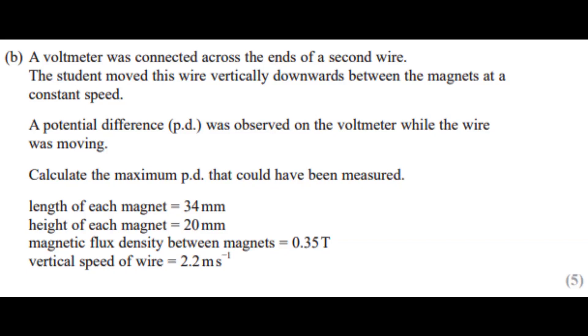Okay, so we got a question right here. A voltmeter was connected across the ends of a second wire. The student moved the wire vertically downwards between the magnets at a constant speed. A potential difference was observed on the voltmeter while the wire was moving. Calculate the maximum potential difference that could have been measured.